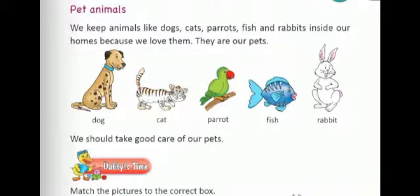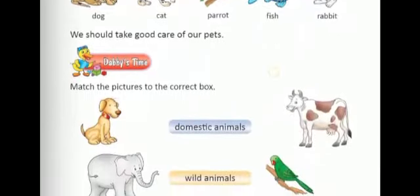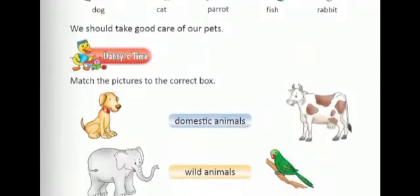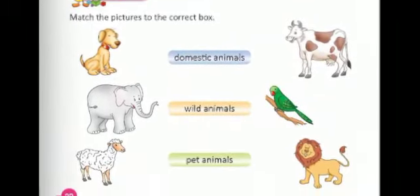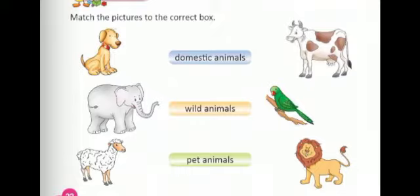Now let us see what Debbie wants to say. Match the pictures to the correct box. The pictures are of dog, elephant, sheep, cow, parrot and lion. We have to match them with the correct box. The boxes are of domestic animals, wild animals and pet animals. Children, observe the picture very carefully and match it.